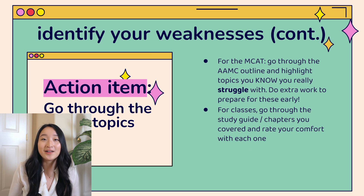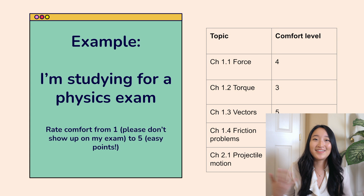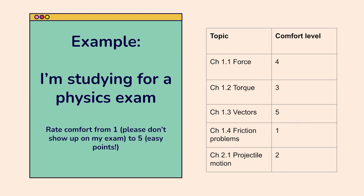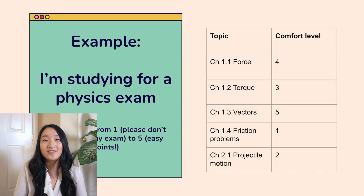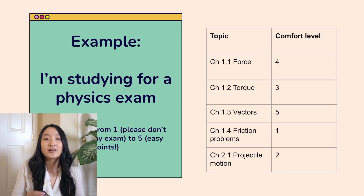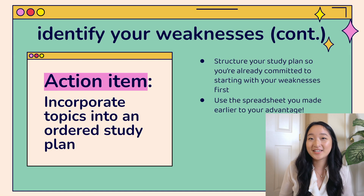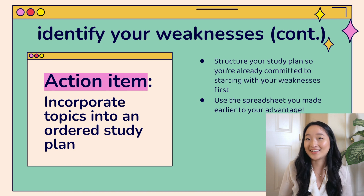I don't know why I pushed this off for over a month when I was studying for the MCAT — it would have been so much more helpful to do that at the beginning and focus on those topics first. As an example, if you're studying for a physics exam, rate all of your topics on a scale of one to five: one being topics you're praying don't show up, and five being easy points. Once you have all your topics outlined in a table and you've rated your comfort level, it's easy to sort by difficulty and write down the dates you'll study each topic. It's clear you'd want to prioritize chapters 1.4 and 2.1 because those are the most difficult.